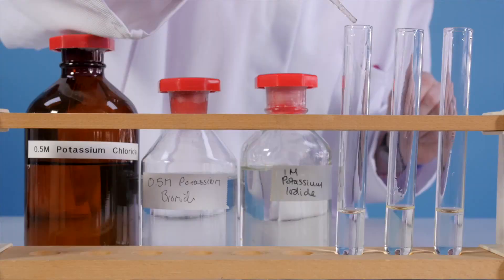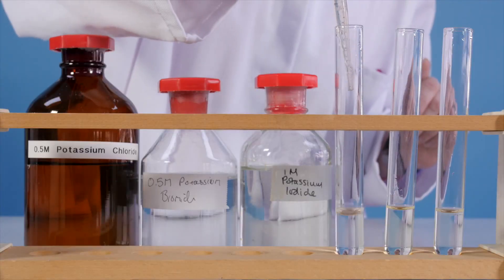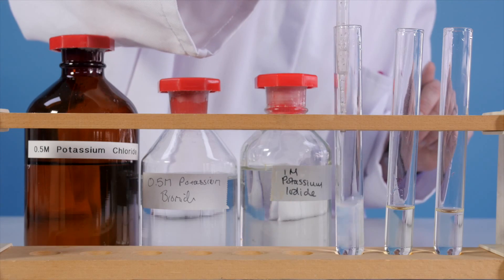Using a pipette, add dilute nitric acid to your samples, followed by about two centimeter cubed of silver nitrate.